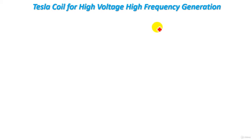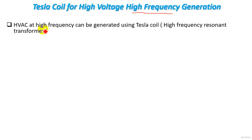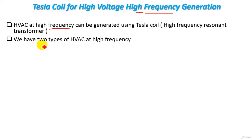This lecture is about understanding the second type of high voltage, which is high voltage AC at high frequency, and how to use a Tesla coil to generate this type of high voltage. High voltage AC at high frequency can be generated using a Tesla coil, also called a high frequency resonant transformer.